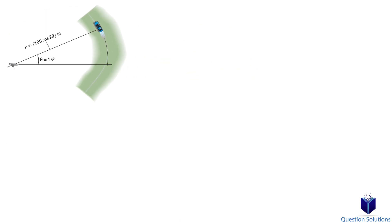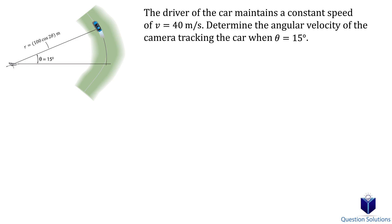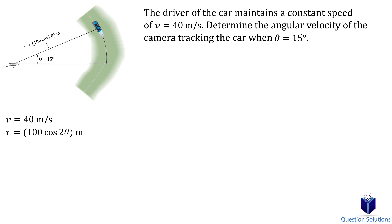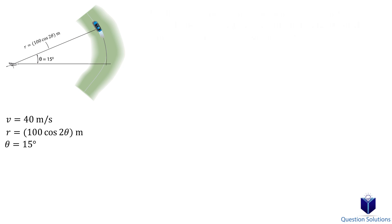Let's look at another example. Here we are asked to find the angular velocity of the camera when theta equals 15 degrees. We know the magnitude of velocity is 40 meters per second, and we're given the equation for the position. Notice that this equation is not a constant like the previous question — the distance from the origin changes with respect to the angle. Since we're solving for angular velocity, we'll use the magnitude of velocity equation, which also requires the first time derivative of the position equation. You will need to remember the chain rule from calculus, which is essential for this chapter.